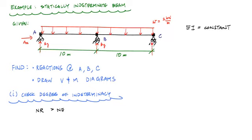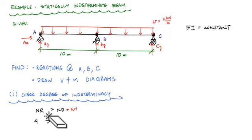Then this roller support at B gives BY, and at C we have CY. Note this is a simple way to check — it does not work all the time, especially when there are hinges. If the number of reactions is greater than or equal to the number of equilibrium equations plus the number of hinges, it is statically indeterminate. Here, the number of reactions is 4, and the number of equilibrium equations is 3 with no hinges, so 4 is greater than 3 — this structure is statically indeterminate.